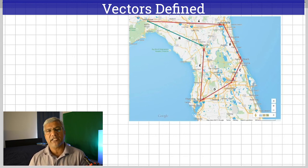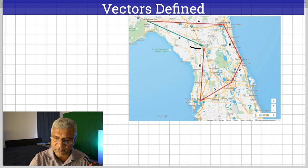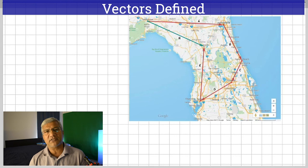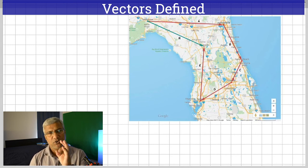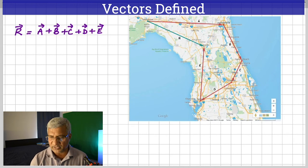This works for any number of vectors. If there was another vector connected from E back to the starting point — closing the diagram — the resultant of those vectors would be zero. If you start from a point and come back to the same point, the net sum of all those vectors is zero. The resultant R is A plus B plus C plus D plus E.